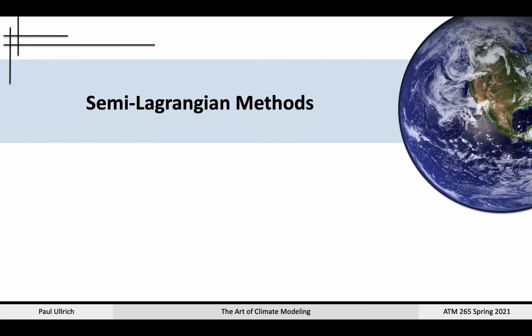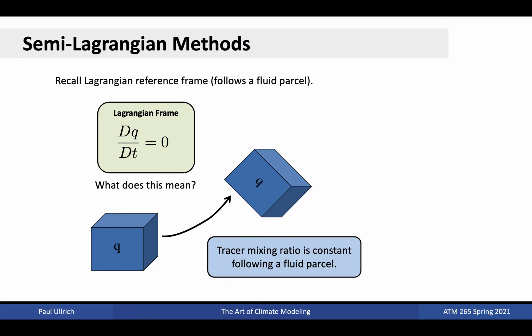Alright, that wraps up our discussion on Runge-Kutta methods. Next, we're going to consider a completely different method for solving these equations in Lagrangian form, yielding a class of methods known as semi-Lagrangian methods. For simplicity, we're going to restrict our discussion to the advection equation, although the methods discussed here can also be applied to any partial differential equation in Lagrangian form, with some modification.